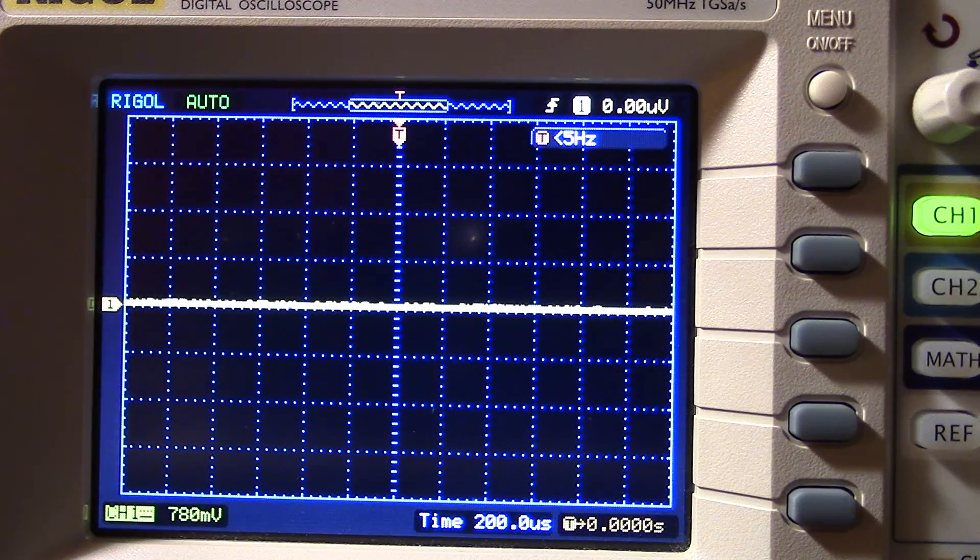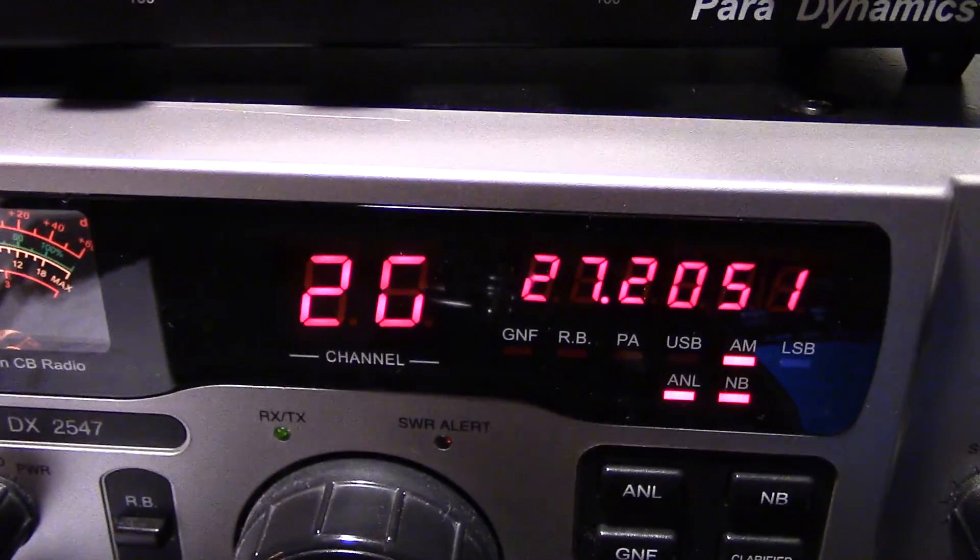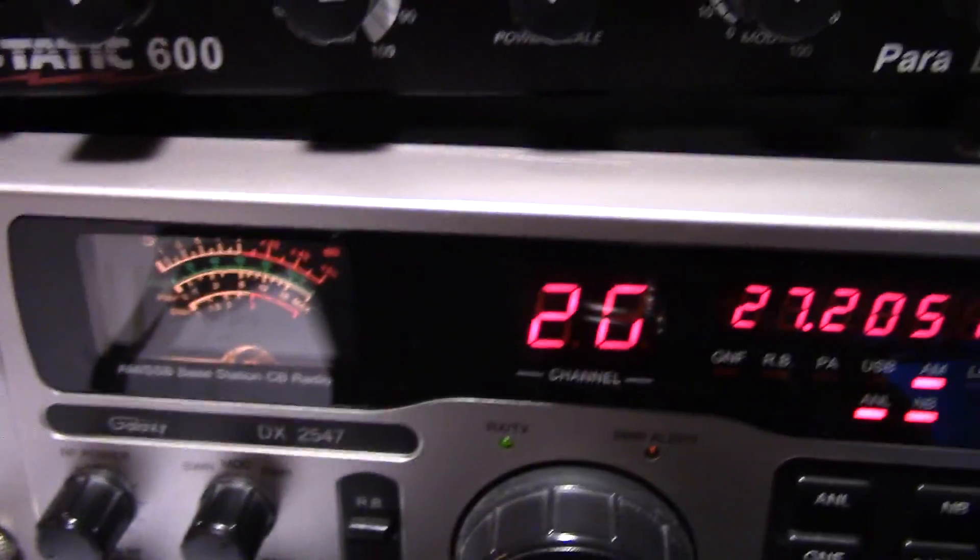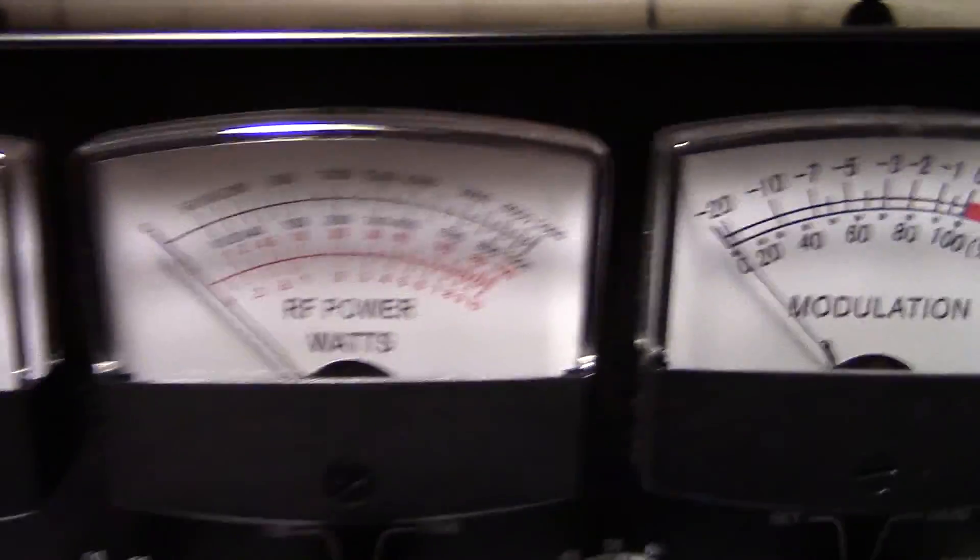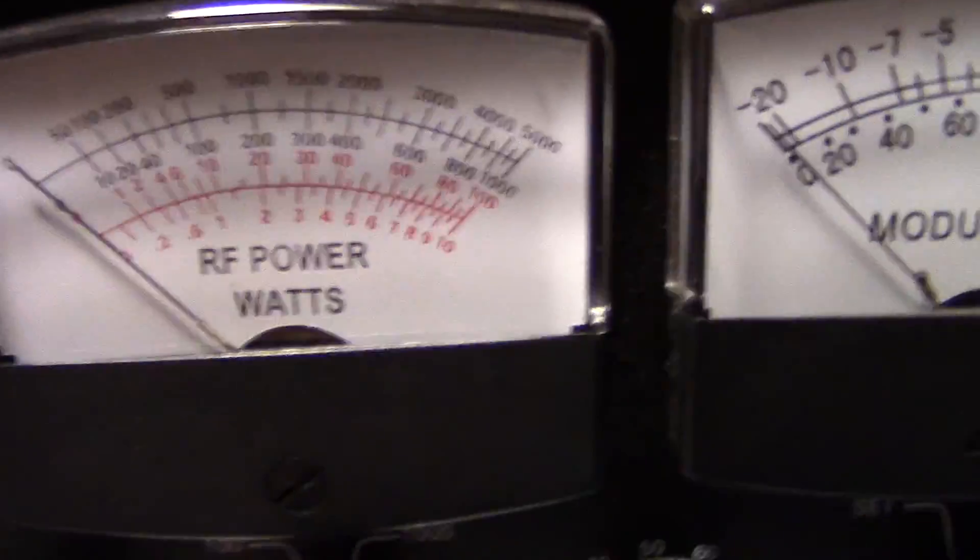Alright, so to begin with, I'm just using a little setup here. I'm using my Galaxy DX2547. It's going to be on channel 20 AM. I'm just using my little A-Static 600 wattmeter. It doesn't have to be too crazy accurate for this demonstration. I'm going to be using a 2 watt carrier on a little 10 watt scale.